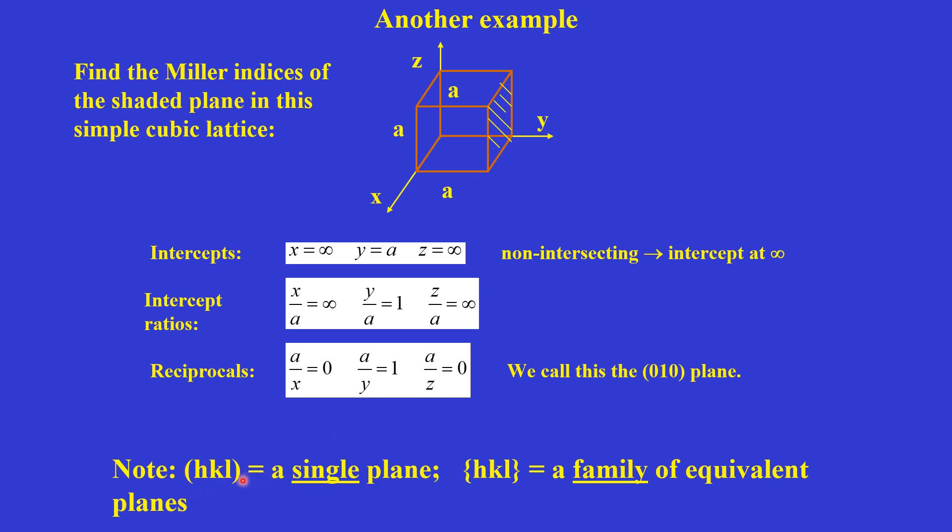Usually a single plane is denoted in parentheses, and a family is denoted in curly brackets, as we have already seen in our last slides.